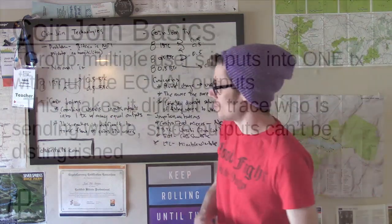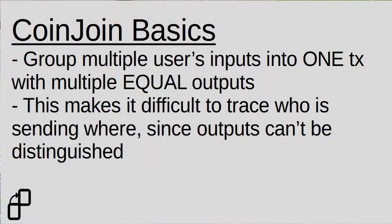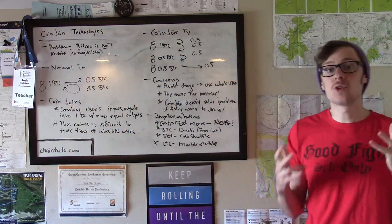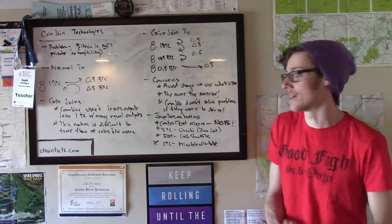What CoinJoins do is they combine many users' inputs and outputs into one gigantic transaction with many equally sized outputs. When I say equally sized, I mean equally sized in value. For example, a CoinJoin transaction might have many outputs of 0.5 BTC. This makes it difficult to trace the flow of coins between users because you can't distinguish between all of these different outputs in the same transaction that have equal value.